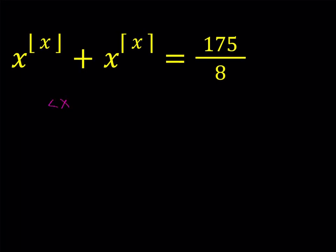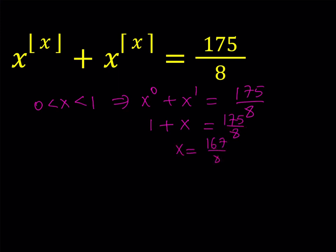Let's start with 0 < x < 1. If x is between 0 and 1, the floor value is 0 and the ceiling value is 1. So we get x^0 + x^1 = 175/8. Well, x^0 = 1, so 1 + x = 175/8. Subtracting 1 from both sides gives 167/8, which is greater than 20. So x cannot be in this interval - contradiction. We don't have any solutions on this interval.